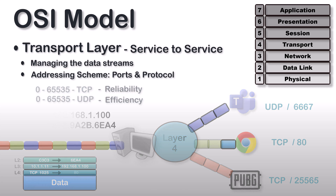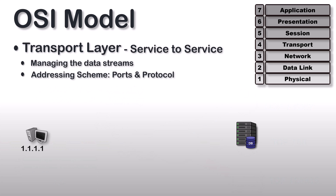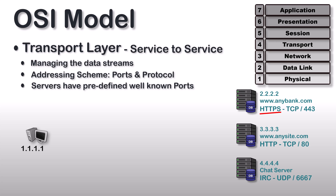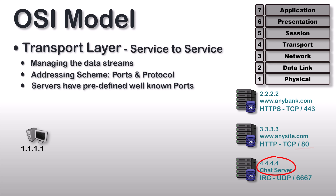Now let's discuss in more detail. Here is a user and 3 servers. Each of these servers is assigned a predefined well-known port number which correlates to the network application. For example, anymake.com receives secure web requests using HTTPS, which by default receives on TCP port 443. The server anysite.com responds to web requests using HTTP, which by default receives on TCP port 80. And the any chat server is running IRC — Internet Relay Chat — which is an online chat application that uses UDP port 3667.